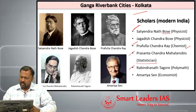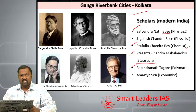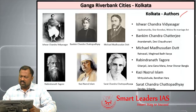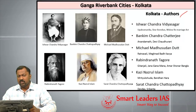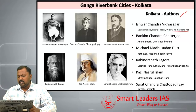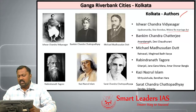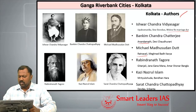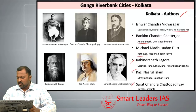Rabindranath Tagore was a polymath from Bengal, and Amartya Sen is a famous Nobel laureate economist also from Bengal. Kolkata is known for many authors: Ishwar Chandra Vidyasagar was a social reformer through whose efforts the Widow Remarriage Act was passed in 1856. Bankim Chandra Chatterjee authored Ananda Math, and Michael Madhusudan Dutt's Ratnavali is very famous. Kazi Nazrul Islam and Sarat Chandra Chattopadhyay are also important figures associated with Kolkata.